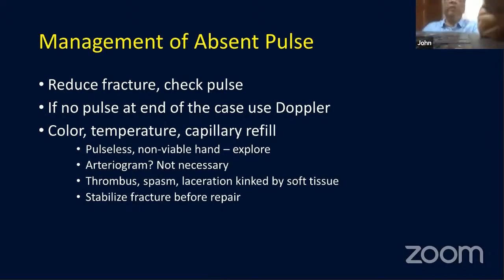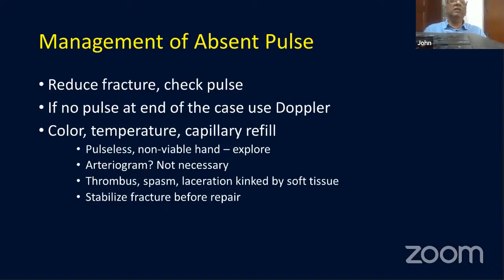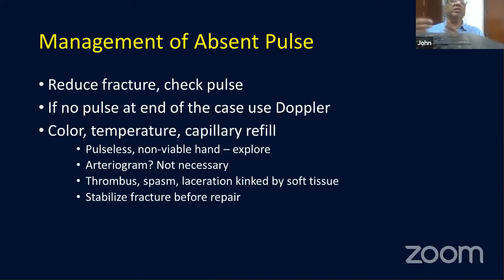The general consensus today — though not universally accepted — is that if you cannot feel the pulse, urgent reduction is needed. In many cases, the vessel is kinked by the fracture particularly when the arm is in extension, and once the fracture is reduced, circulation and the pulse are automatically restored.